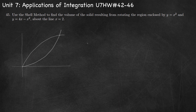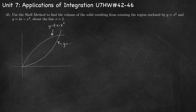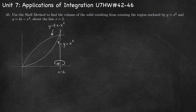Number 45: find the volume of the solid from rotating the region enclosed by y equals x squared and y equals 4x minus x squared. The parabola opening down is y equals 4x minus x squared, and the parabola opening up is y equals x squared. We want to rotate around the line x equals 2, which is right here. Using the shell method, we draw our reference rectangle parallel to the axis of rotation, making this a dx problem. So our volume is 2 pi times the integral with respect to x.